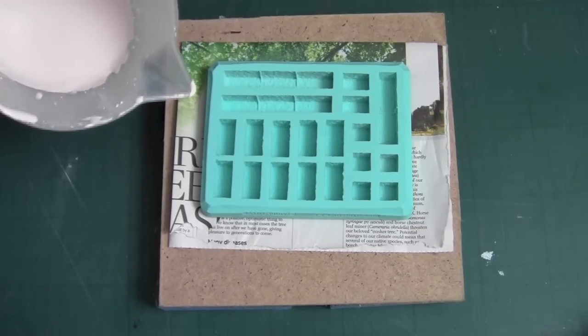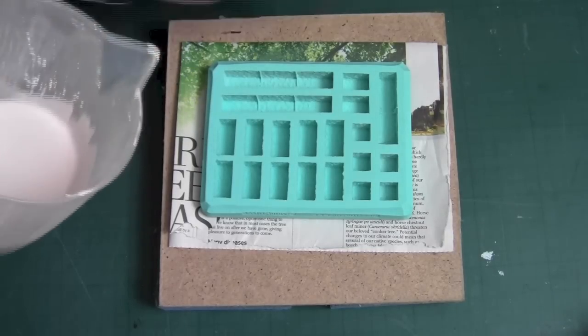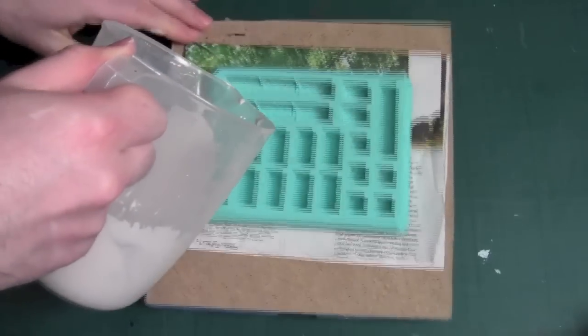Once you have your plaster mixed, start by pouring it in the corner of the mold while banging on the board.